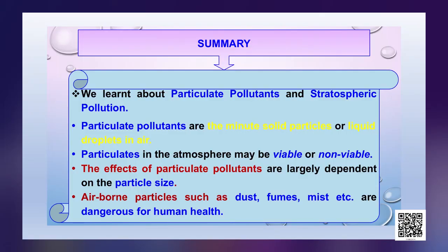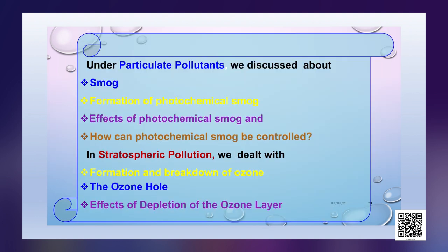Let us sum up what we have learnt in this session. We learnt about particulate pollutants and stratospheric pollution. The particulate pollutants are minute solid particles or liquid droplets in the air, which may be viable or non-viable, and their effects are largely dependent on their size. Under particulate pollutants, we discussed smog, formation of photochemical smog, its effects and how it can be controlled. In stratospheric pollution, we dealt with the formation and breaking of ozone, the ozone hole and the effects of depletion of the ozone layer.